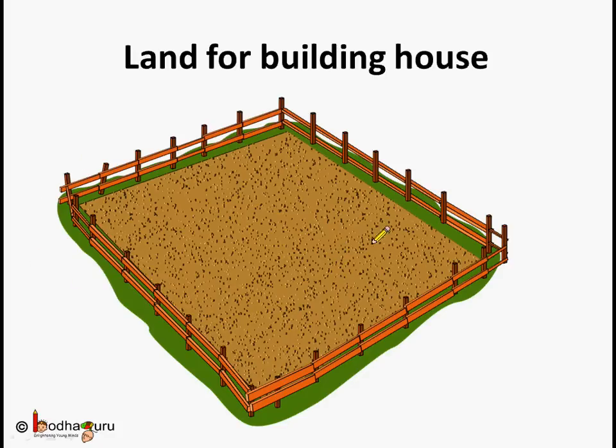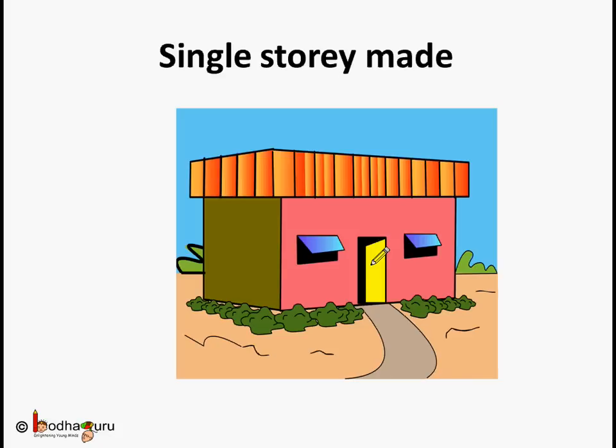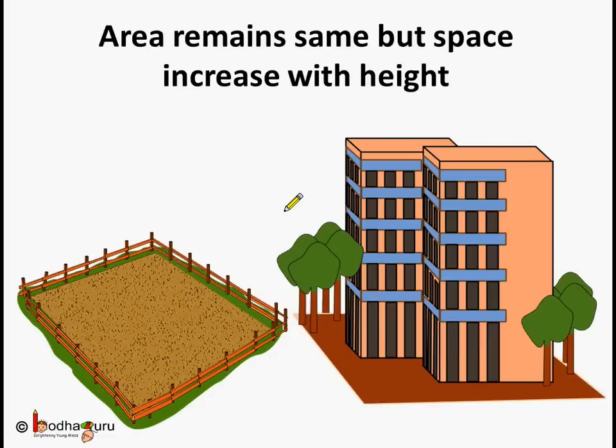So this is the land which Kesean Singh bought to make a house. Using this land he could make a big bungalow, a single story. So this is a single story bungalow. Or what else he could have done? If he made multi-story building there would be more space than the single story bungalow made on the same land. Isn't it? This is because the area remains the same. But as the height of building increases there is more space inside the building. We can say space increases with the height of the building.